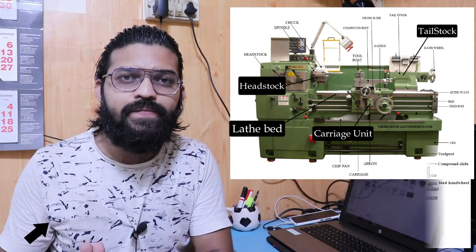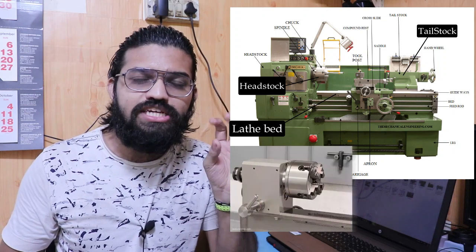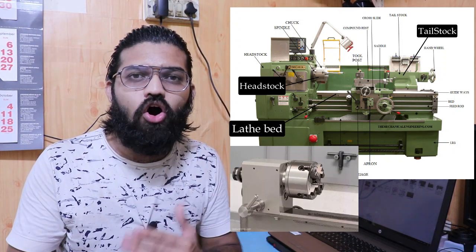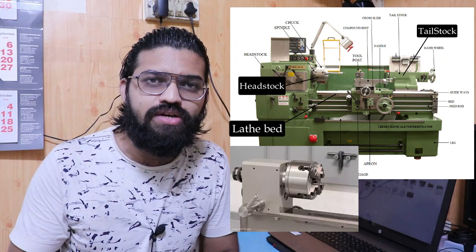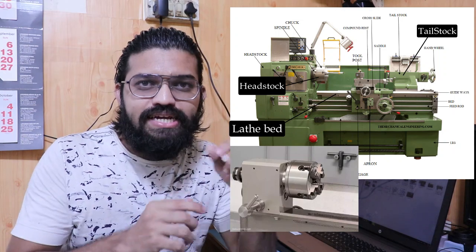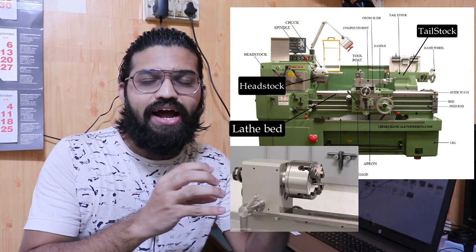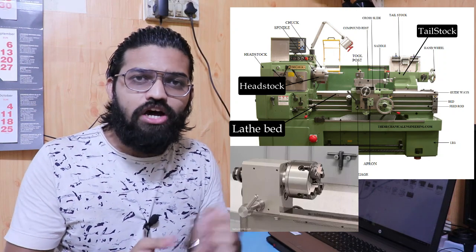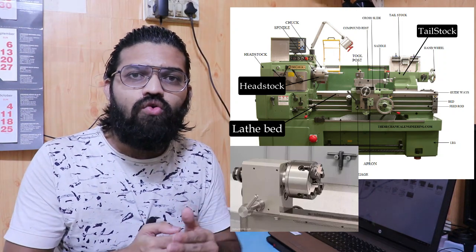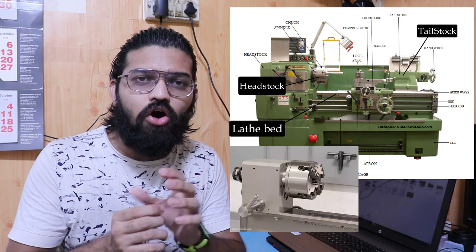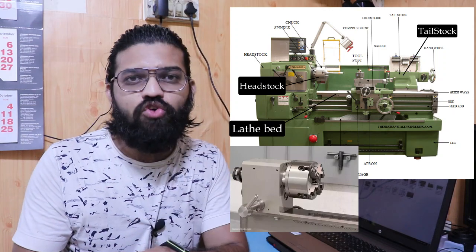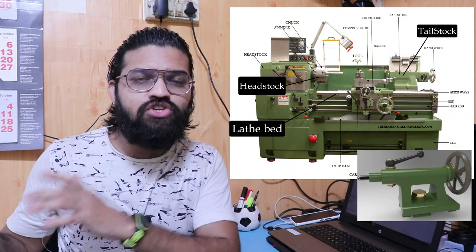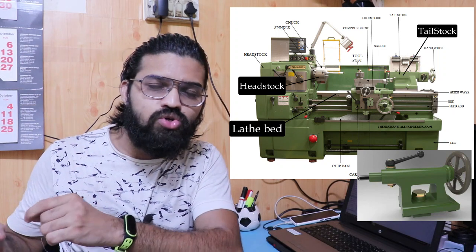The headstock is the work-holding device; it can be either a three-jaw or four-jaw chuck, depending on the type of lathe being used. The workpiece gets inserted into the headstock and is held rigidly and tightly — the tightness must be ensured before turning on the lathe machine. When we turn on the lathe machine, the headstock starts rotating and the workpiece or job starts rotating.